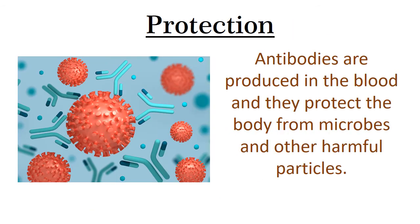The next function of blood is protection. Antibodies are produced in the blood and they protect the body from microbes and other harmful substances. Antibodies are proteins produced by the body's immune system. They detect harmful substances and help the body maintain health properly.